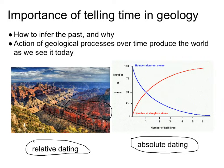In the case of radiometric decay, we know the constant rates at which radioactive elements decay. If we can measure how much decay has occurred, we can tell how old the rock is — just like knowing how fast the second hand moves and how far it has moved lets us calculate elapsed time.